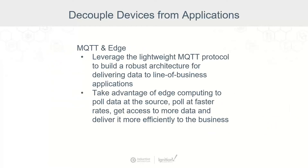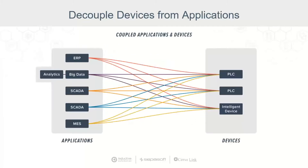Speaking of open standards, let's look at MQTT again. It is a lightweight publish and subscribe protocol that enables message-oriented middleware architectures. It allows you to build a more robust architecture by delivering data to line-of-business applications, and it also lets you leverage edge computing to pull data at the source at faster rates and efficiently deliver that data to the business.